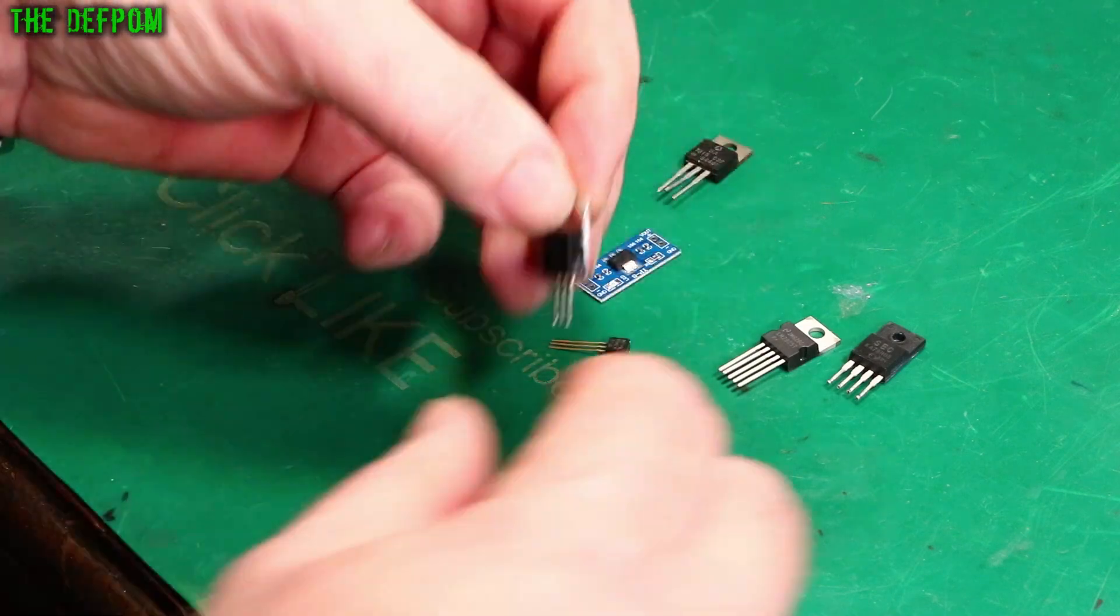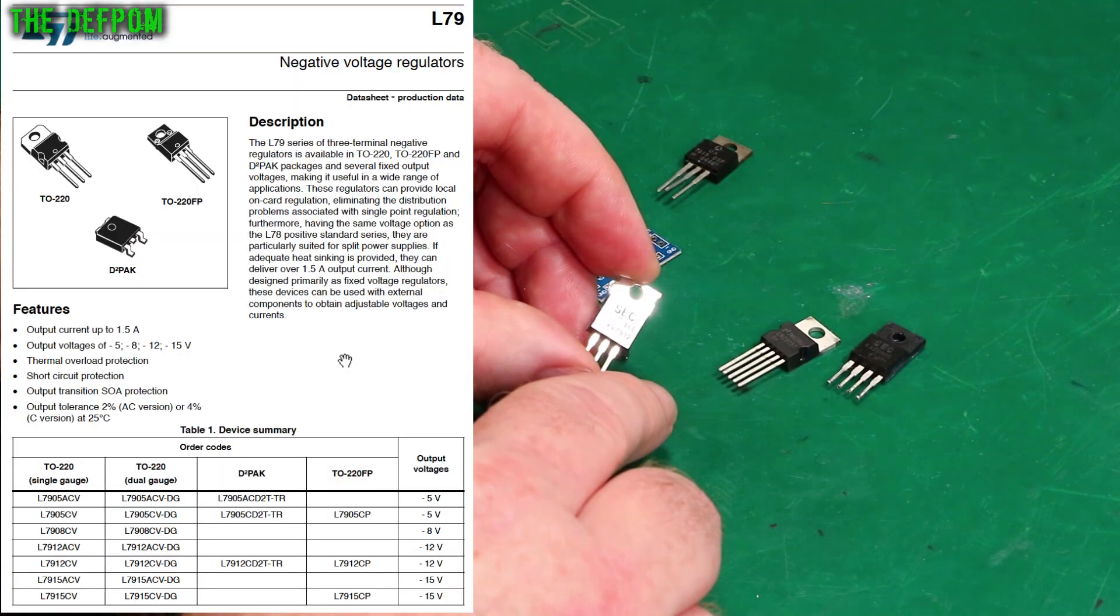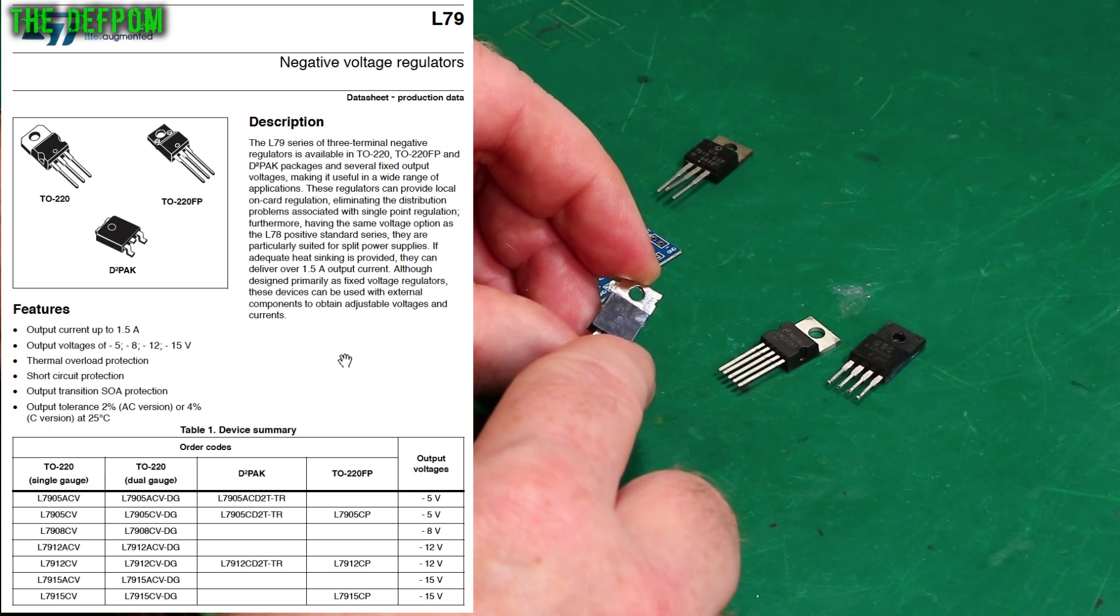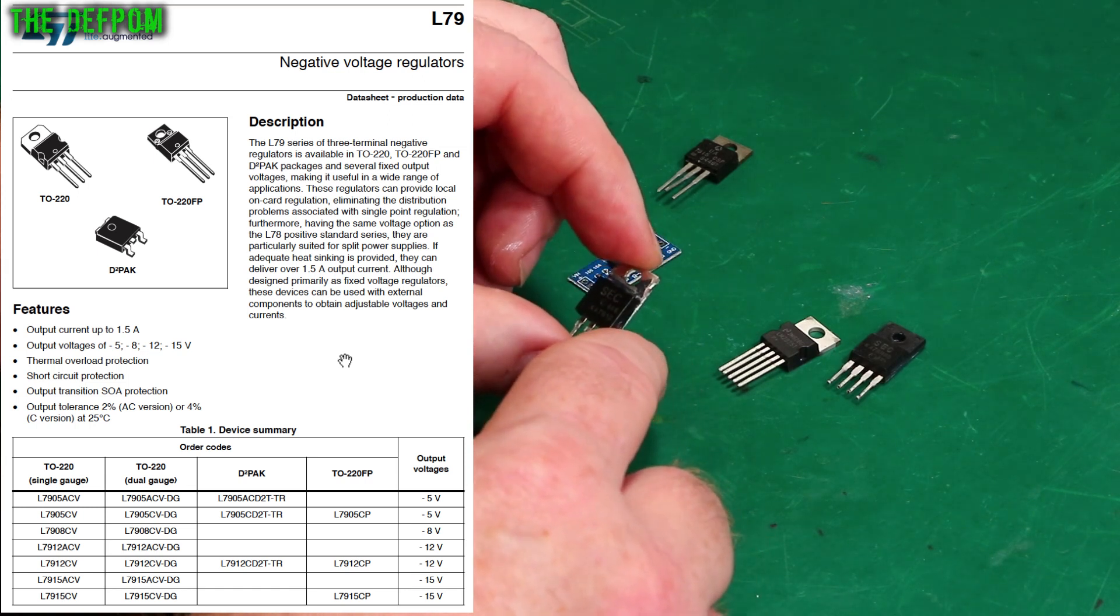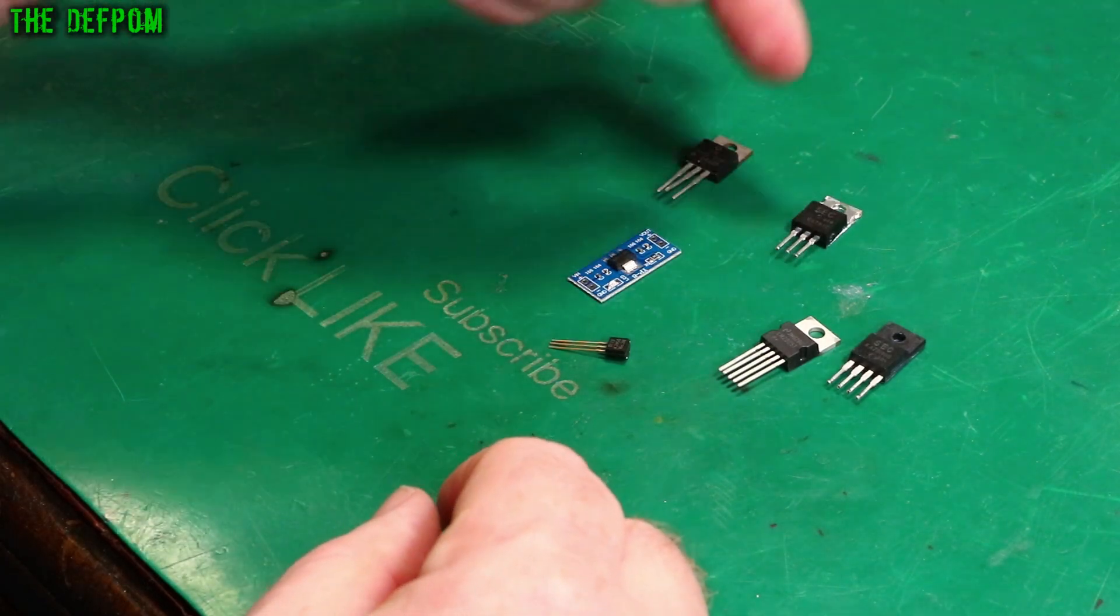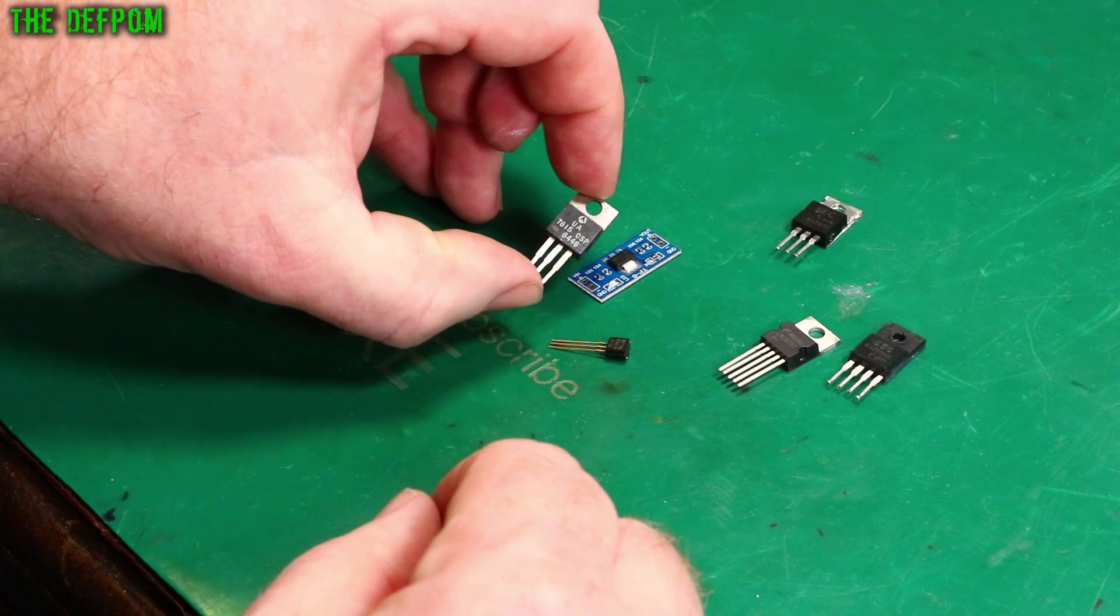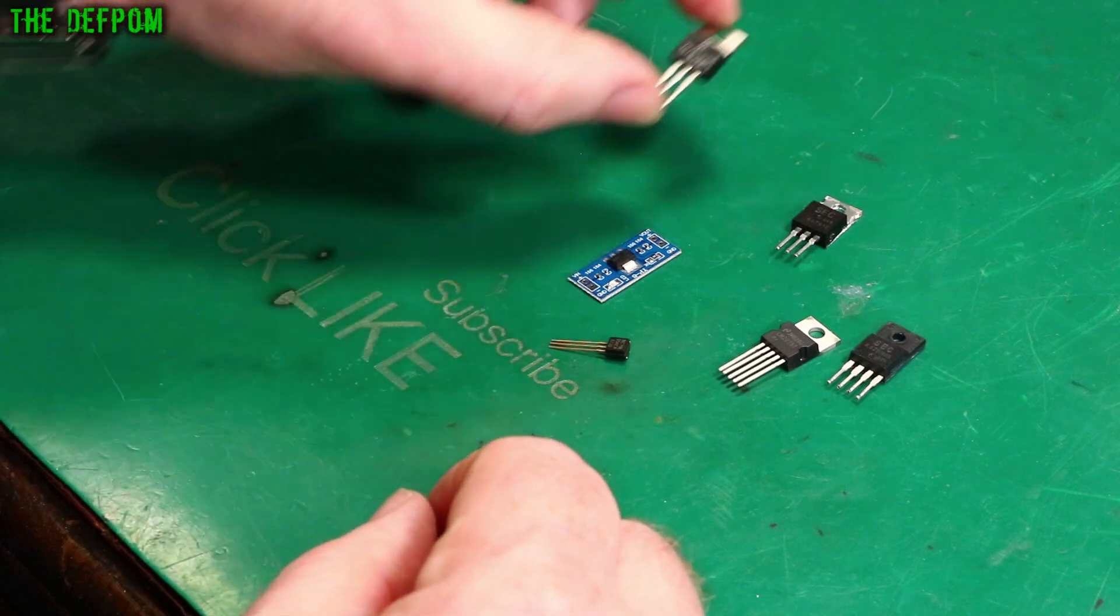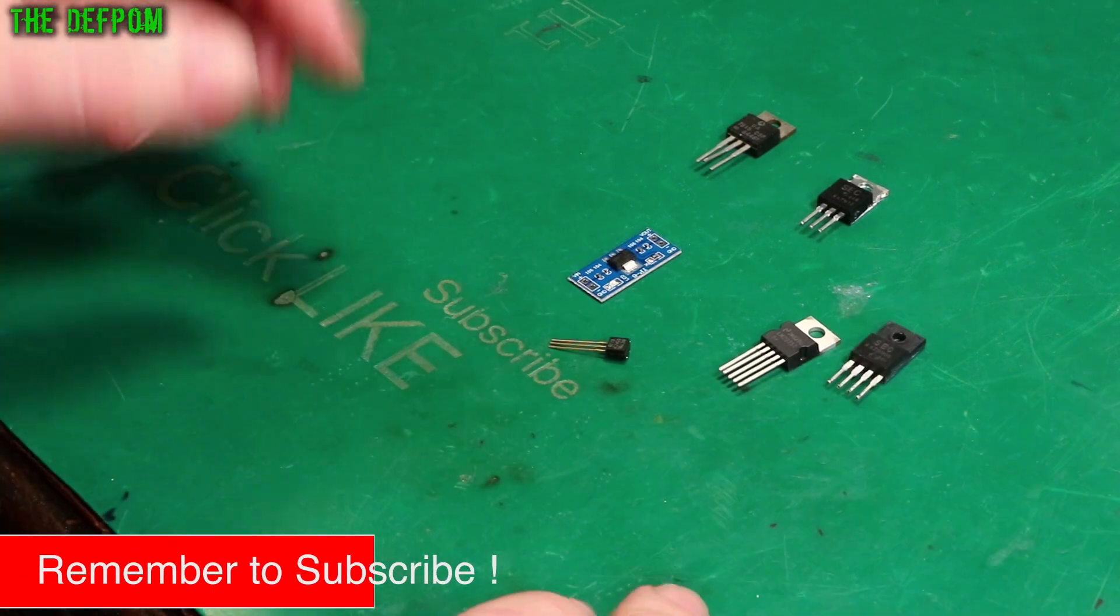Here we have a 7912. So this is like a companion pair I suppose. It says 7912 just down here, you can kind of see it just there. So this is a negative voltage regulator. You put in a negative power supply and it will drop it down for less. If you've got 15 volts going in you might get 12 volts coming out. And this is a positive 15, so if you put in say 18 volts or 20 volts going in you get 15 out. You have to put some support circuitry around as well which uses a couple of capacitors, not much more than that.